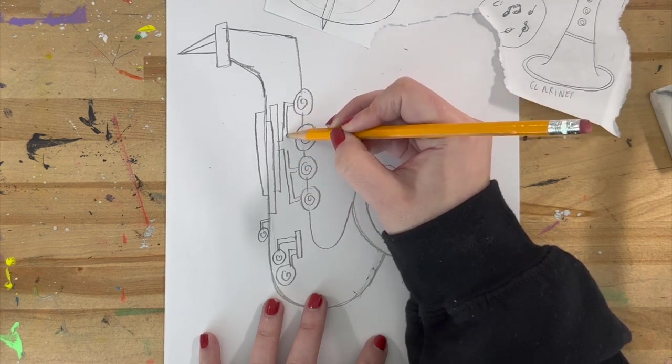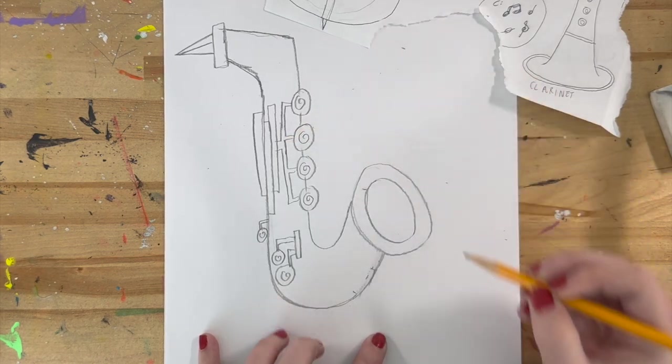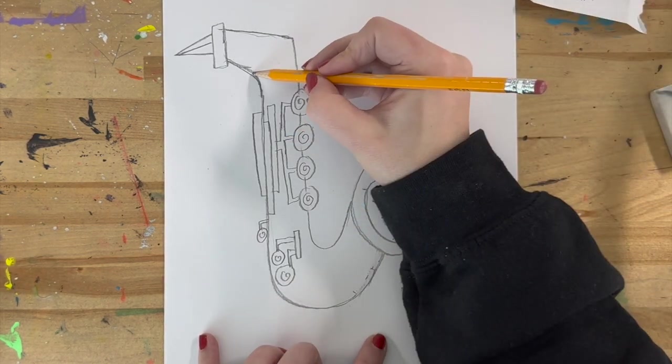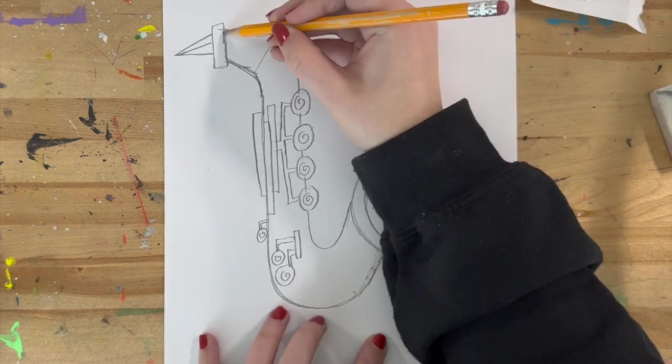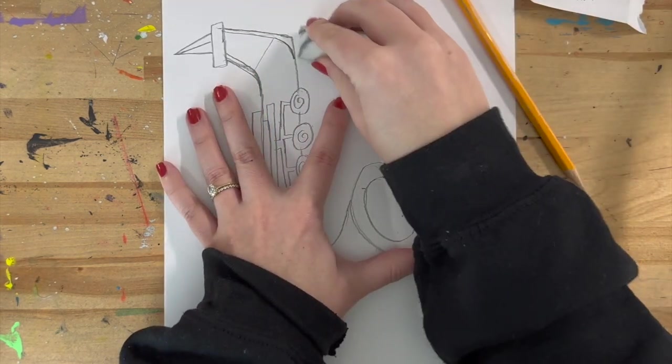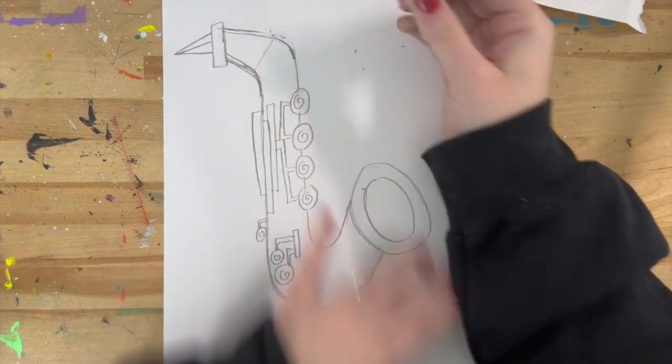It's almost like drawing a maze. All right. So you can add more details if you want to. You can make any changes that you want to as you go. But there is your saxophone.